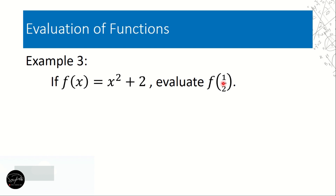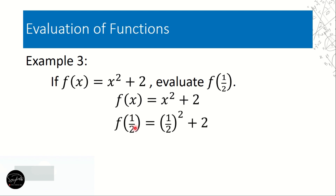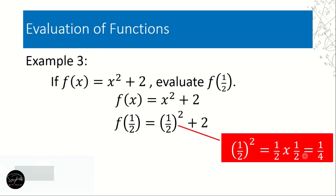We need to master operations on fractions. f(x) = x² + 2; remove x and replace with 1/2. So f(1/2) = (1/2)² + 2. Now (1/2)² = 1/2 multiplied by 1/2: numerator times numerator, denominator times denominator — 1 times 1 is 1, 2 times 2 is 4. So (1/2)² = 1/4.